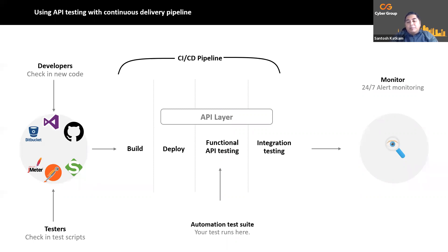Once you have your tests created, it is pretty easy to integrate your automated tests into any CI/CD pipeline tools like Octopus, Jenkins, or CircleCI — any tool you name, you can integrate your API tests into it. Postman and other API tools allow you to write a small piece of code that will run right after deployment. You can run all of your APIs right after the deployment, and that gives the entire project team full confidence in the application being developed and also provides better coverage.